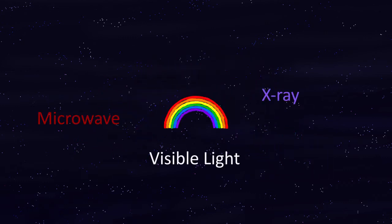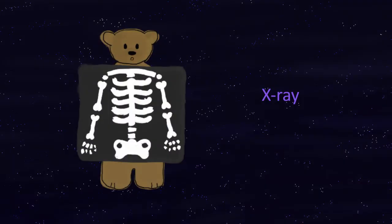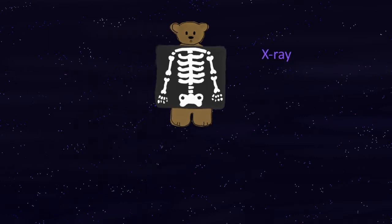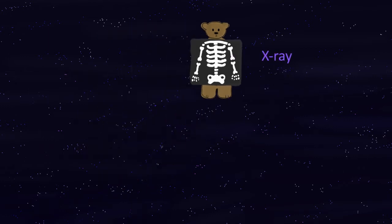So you've heard of x-rays, and these let you take pictures of the bones inside your body, but we can't actually see the x-rays. So x-rays are a color of light that we can't see. Another color of light we can't see is microwave light, so you'll have heard of microwaves.